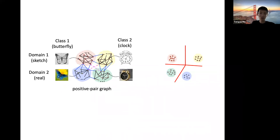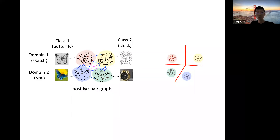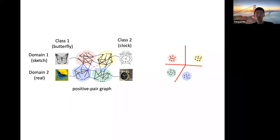As a follow-up work, we can use this framework to study other properties of the embeddings from contrastive learning. One property we study is that the embedding space also captures relationships between clusters. Consider four clusters with two domains and two classes — sketch and real, butterfly and clock — giving a two-by-two semantic grid. The previous theory treats them as four separate clusters, but experiments show they are aligned in this two-by-two way in the embedding space, with a domain direction and a class direction.